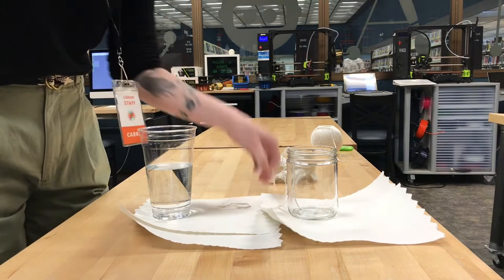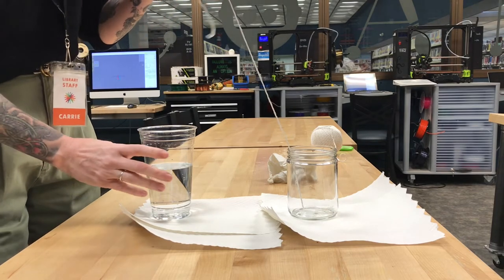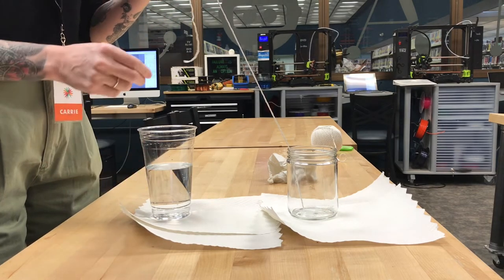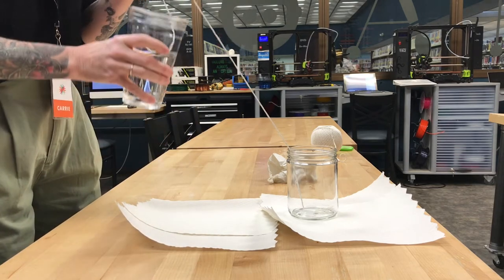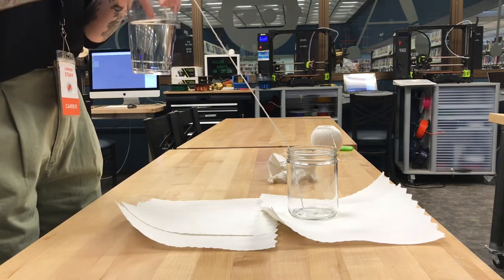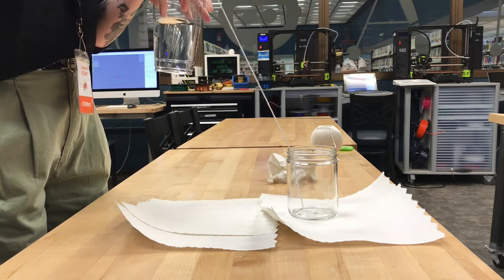So for this experiment I have a piece of cotton string, which I have taped to the bottom of this jar, and a cup full of water. And what I'm gonna do is try to make the water follow this string down into the jar. So I want to fill this jar with water from this cup along the path of this string.